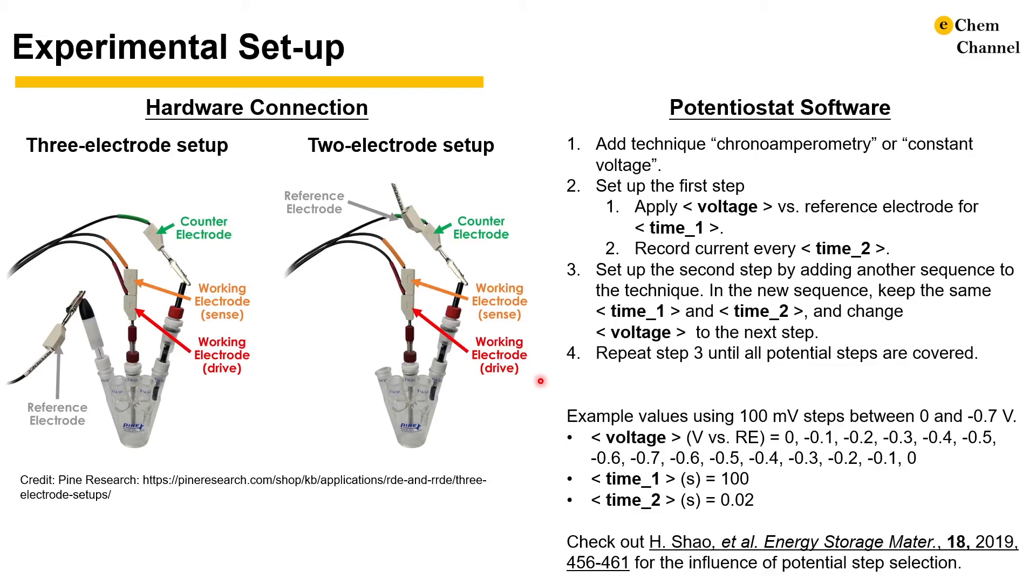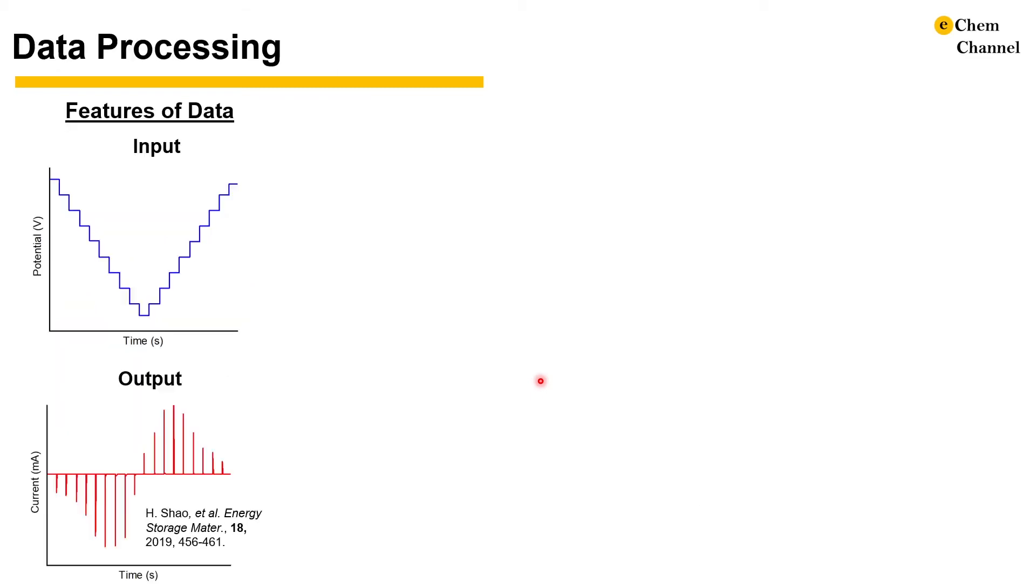If you wonder how the potential step selection affects the calculated voltammograms, please check out the paper by Shen and co-workers. We can obtain a current response with the MUSCA potential profile like the one here for titanium carbide maxine in 3-molar sulfuric acid. Overall, the shape of the current looks similar to the ones obtained from cyclic voltammetry. From the current at the end of each potential step, we can tell minimum parasitic reactions like the hydrogen evolution reactions as the current decayed almost to zero at each step.